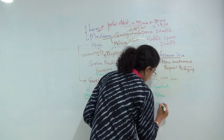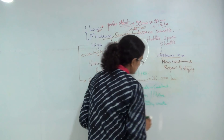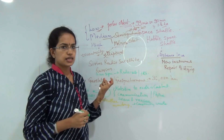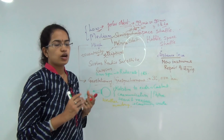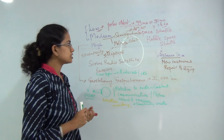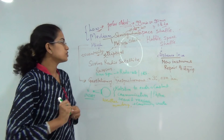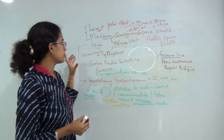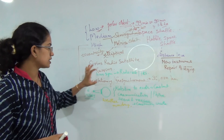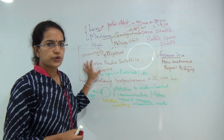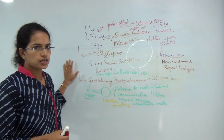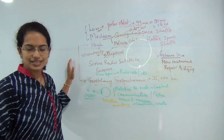In this class we have understood the basic elements of orbit, the key terminologies, and most importantly the low, medium, and high orbits and the kinds of satellites launched into each orbit. We will be covering further topics in geography in further classes. Till then, have a good day ahead.